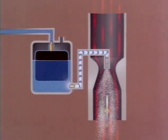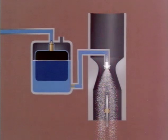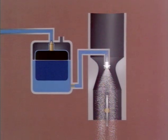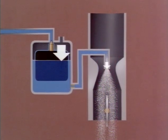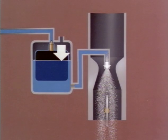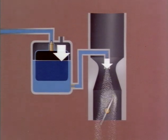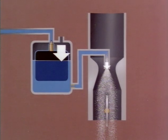The flow of fuel is controlled by the difference between pressure at the nozzle of the jet and the atmospheric pressure in the float chamber. The size of the pressure drop governs the operation of the engine, which responds to the position of the throttle.